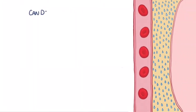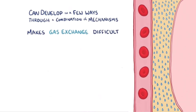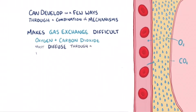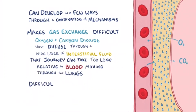Pulmonary edema can develop in a few ways, and often develops through a combination of mechanisms. It makes gas exchange difficult because oxygen and carbon dioxide have to diffuse through a wide layer of interstitial fluid to get from the alveoli to the pulmonary capillary and vice versa. That journey can take too long relative to how quickly blood moves through the lungs, making it hard to fully oxygenate the blood.